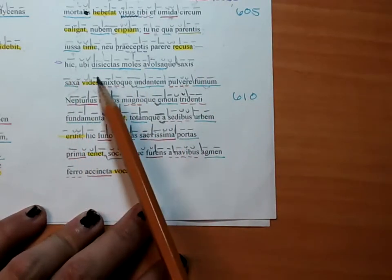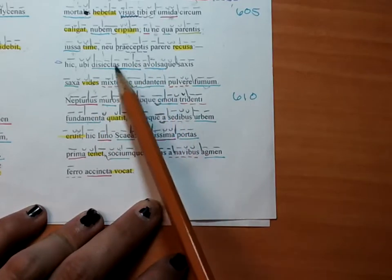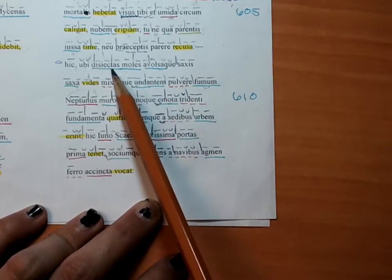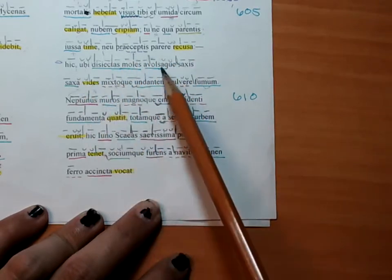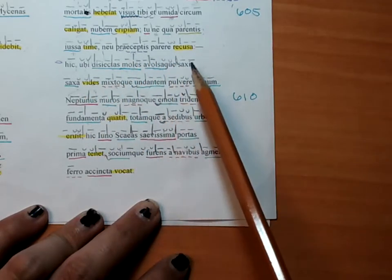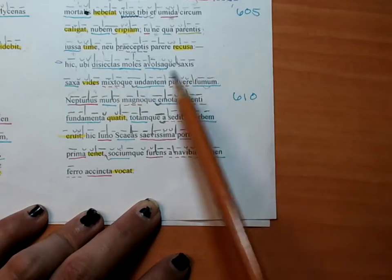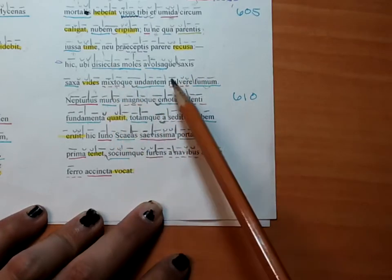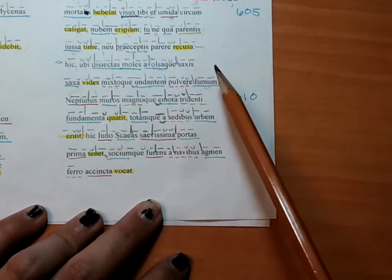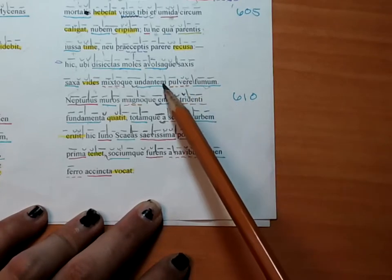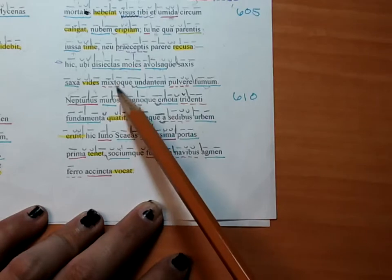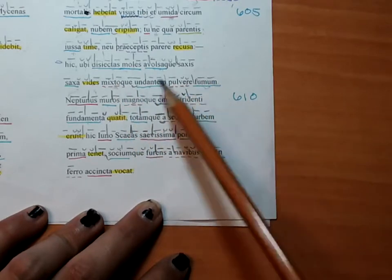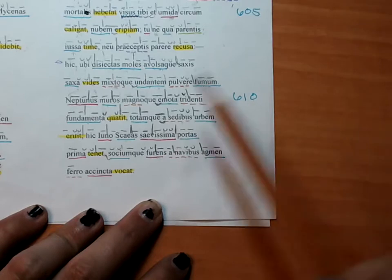So here where you see the masses having been thrown aside, and the rocks having been cut out from or turned from rocks, and you see the undulating, the smoke undulating with dust having been mixed in. Double check my vocab words there. This is definitely present active. All right.